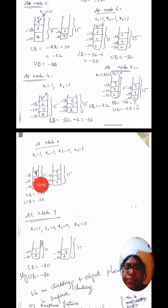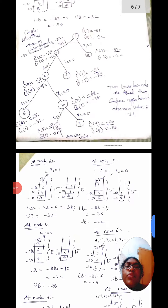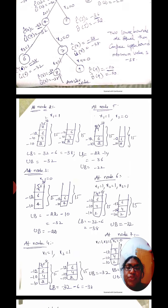At node 4, we check the condition. Node 4 has x1 equal to 1 and x2 equal to 1. We write down this condition and check it. The details will be discussed in the next video.